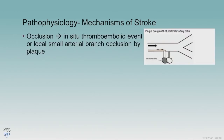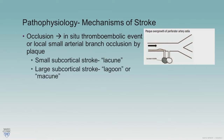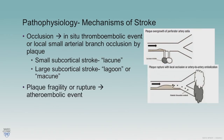There are several mechanisms of stroke to consider with intracranial disease. The first is occlusion or an in-situ thrombotic event, or a local small arterial branch occlusion by plaque. This can actually look like a small vessel stroke or a small subcortical stroke — what we would call a lacunar infarct. Sometimes multiple branches are involved, producing a larger infarct pattern.